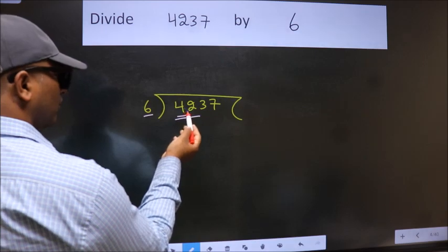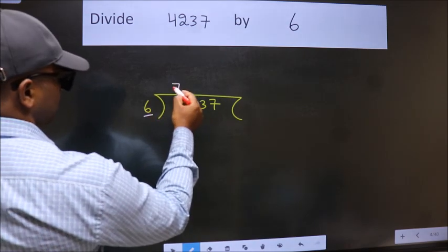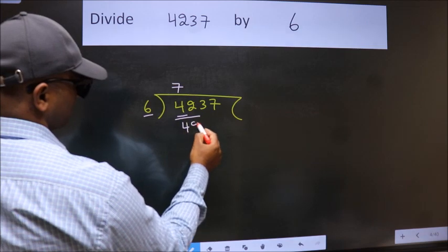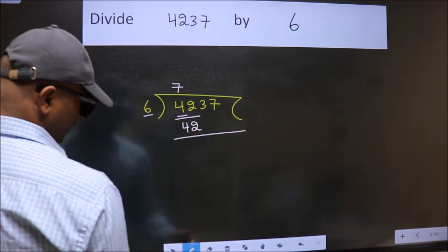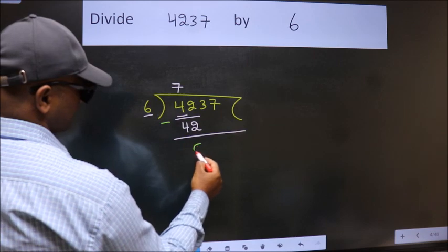When do we get 42 in 6th table? 6 times 7 is 42. Now, we should subtract. We get 0.